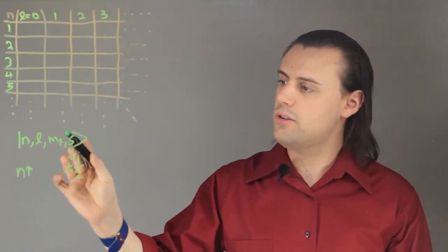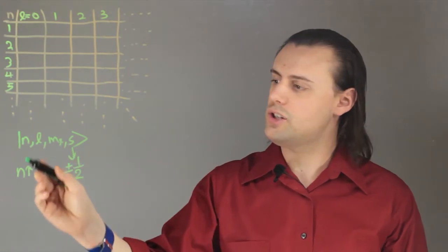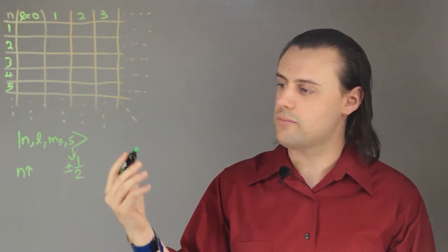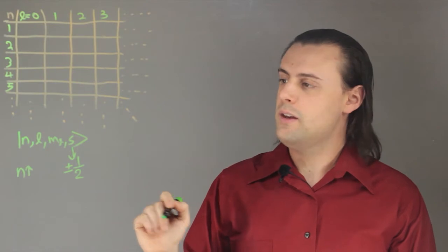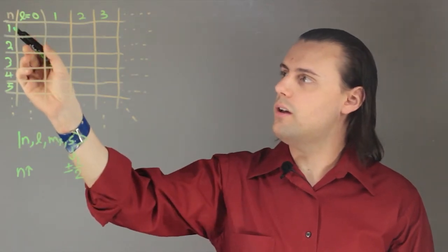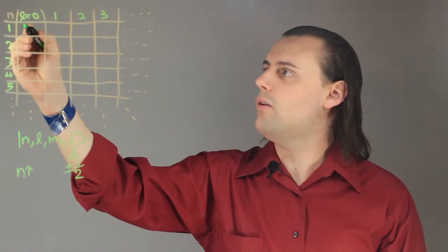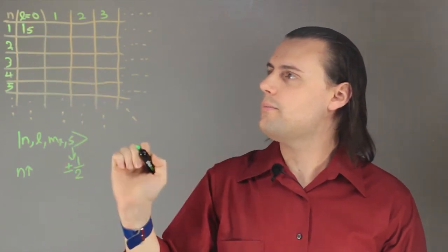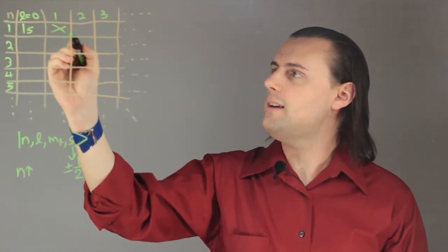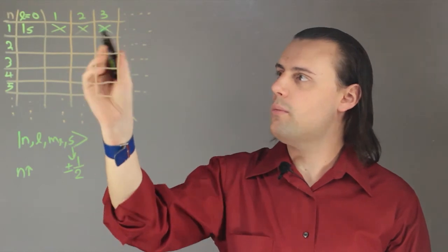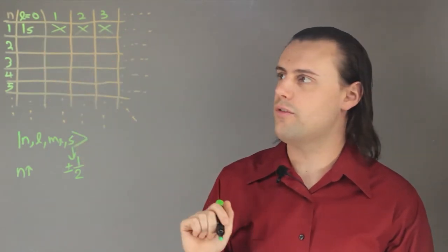Now, there's only a certain number of orbitals that each energy level can have. So for an energy level n equals 1, you can only have an s orbital, and we call that 1s here. We can't have any other orbitals in this energy level because those are forbidden.